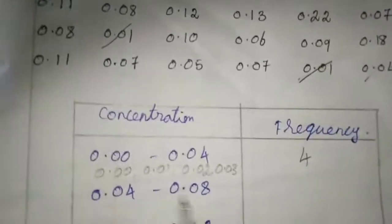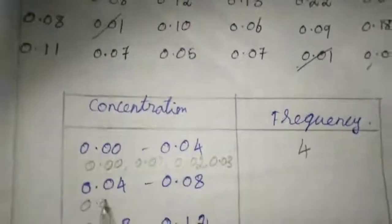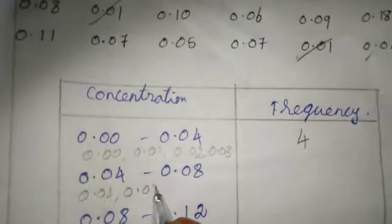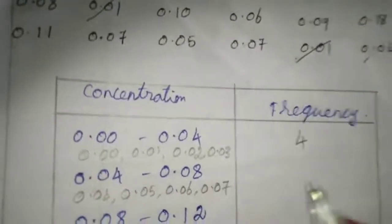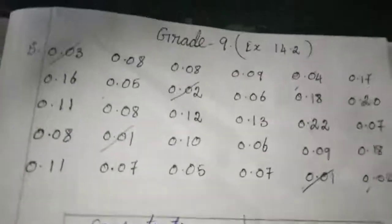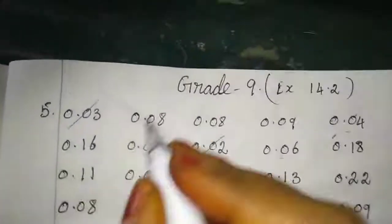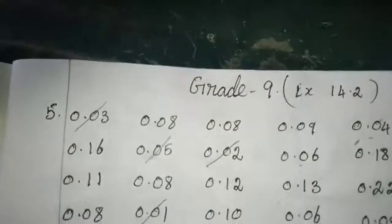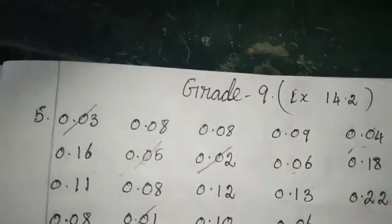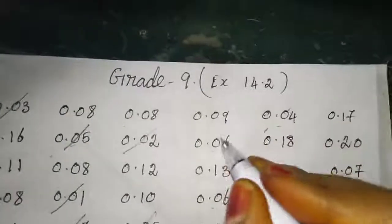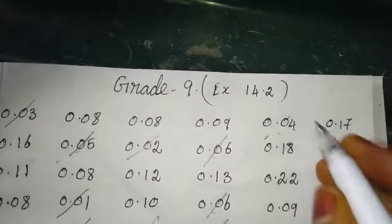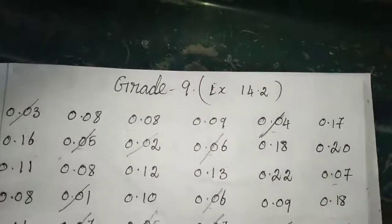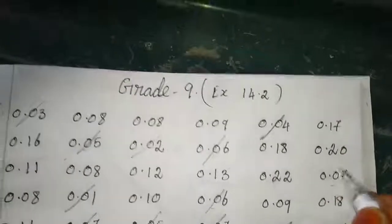Next 0.04 to 0.08, that means 0.04, 0.05, 0.06, 0.07. I am going to refer the data. Now 1, 2, 3, 4, 5, 6, 7, 8, 9, so here we have 9.